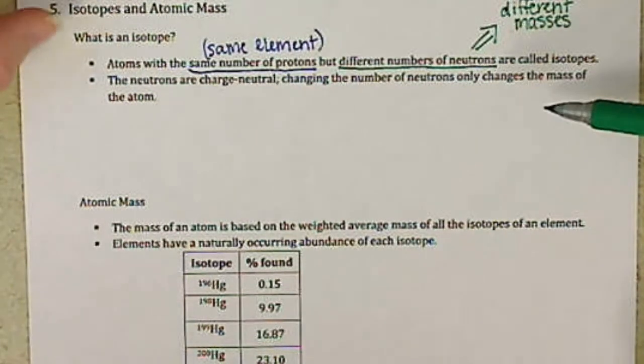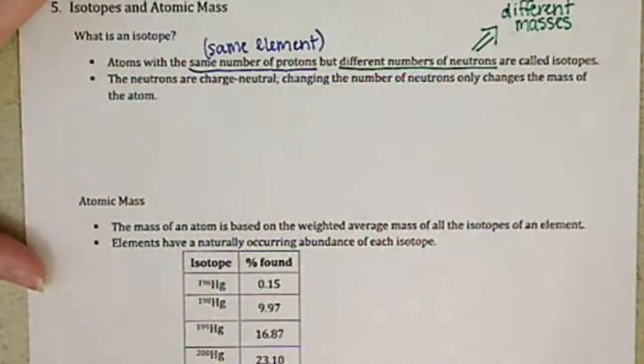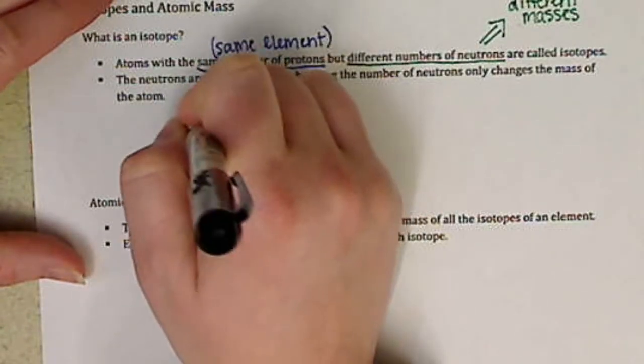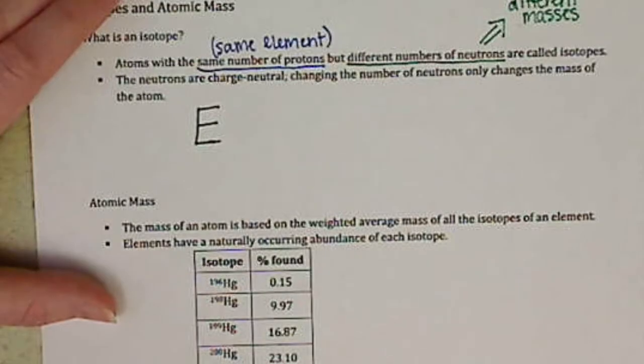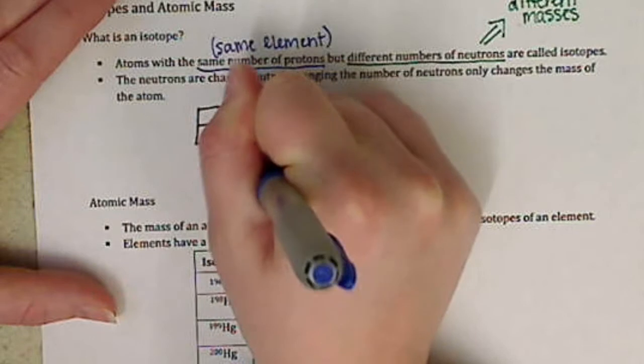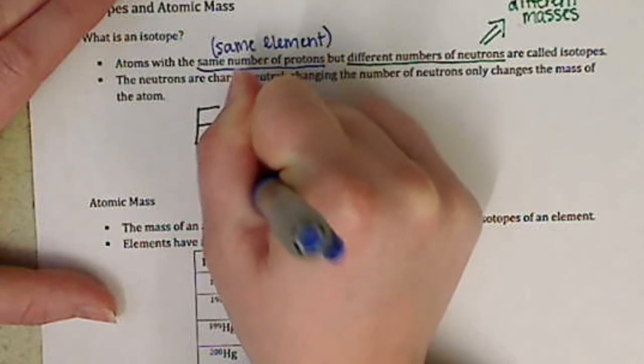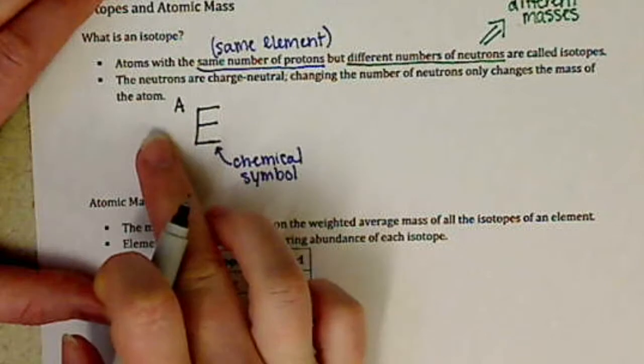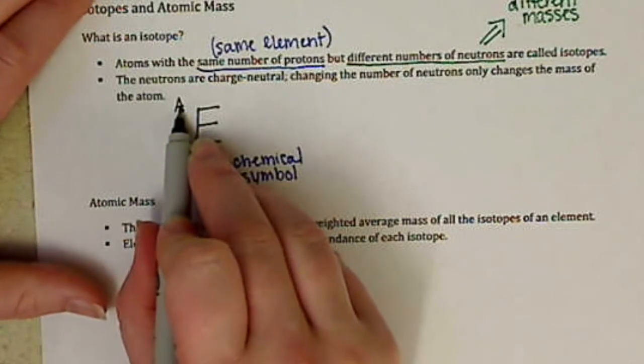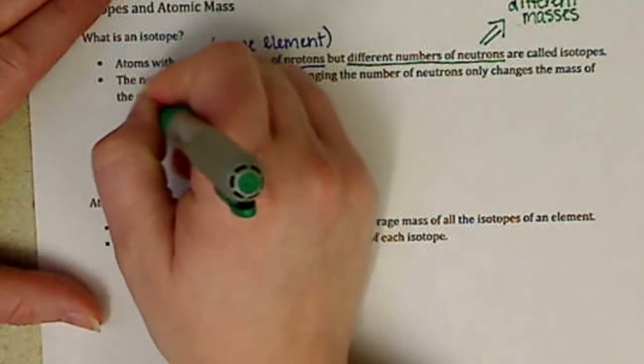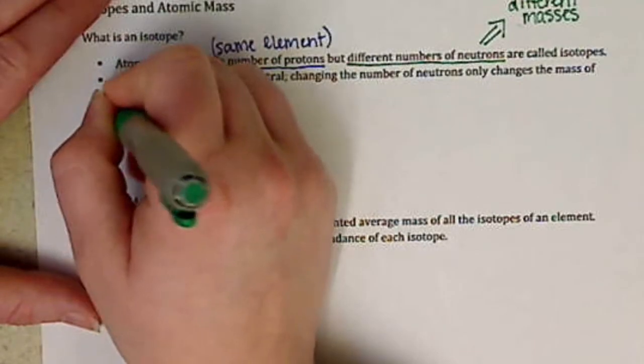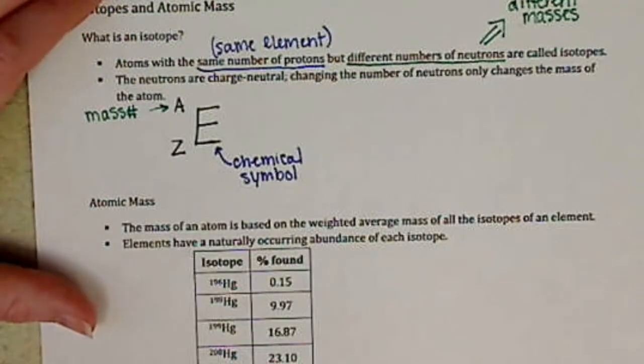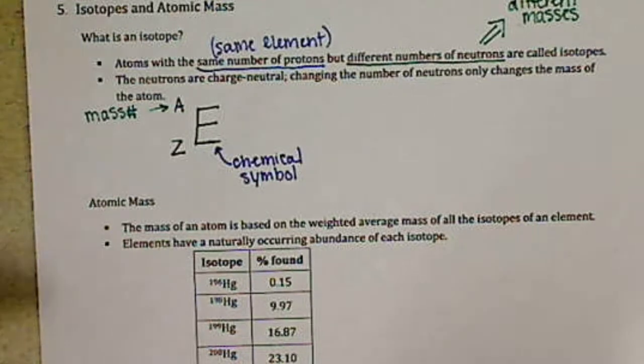So how we represent isotopes when we're dealing with them on an individual basis is we have a particular symbol that we use. So the generic symbol, we have capital E, and this is just the chemical symbol. It's a two-letter symbol. Then we have to the left of that symbol, up as a superscript, we have A, that's our mass number. And then Z, down below, this is our atomic number, or the number of protons.